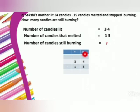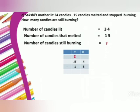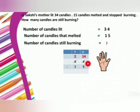Here is the table form with tens and ones. I have already written the numbers. Starting from ones: 4 minus 5 cannot be done. So we will borrow from tens — change 3 tens into 2 tens and 10 ones. There are already 4 ones, so now it will be 14. So 14 minus 5 — open your 5 fingers, backward counting from 14: 13, 12, 11, 10, 9. So 14 minus 5, your answer is 9.